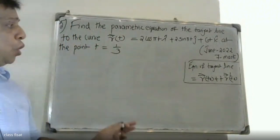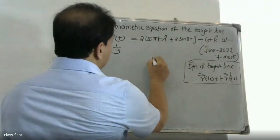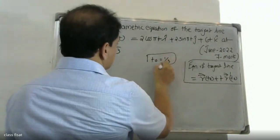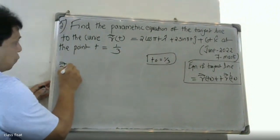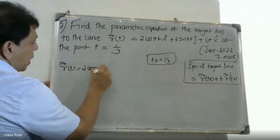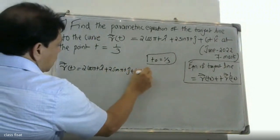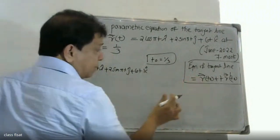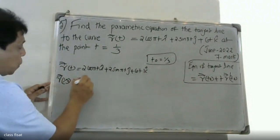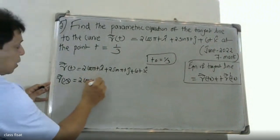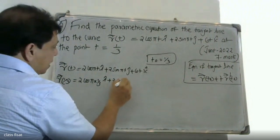So r(t₀) + t · r'(t₀). Here t₀ = 1/3. r(t) = 2cos(πt)i + 2sin(πt)j + 6tk. Now r(t₀) is equal to r(1/3).